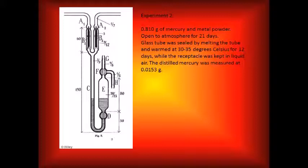In experiment two, it followed the same procedure as experiment one, but used 0.810 grams of sample, and the tube was not sealed until after three weeks of letting sample in the tube open to the atmosphere. So the tube was only sealed for two days instead of 23 days. The tube was warmed at 30 to 35 degrees Celsius for 21 days, while the receptacle was in liquid air. The distilled mercury was measured at 0.0153 grams.